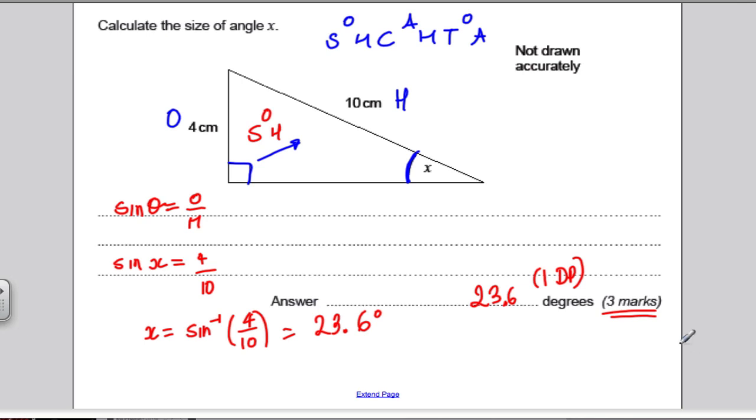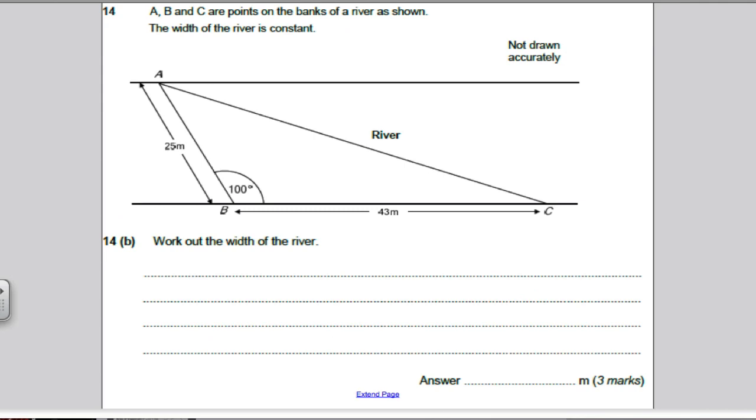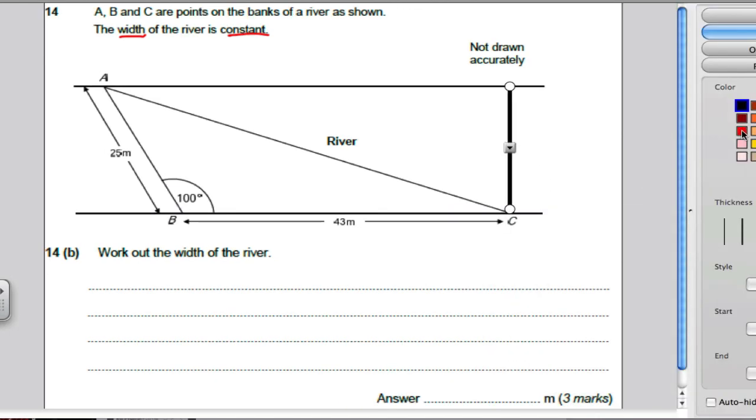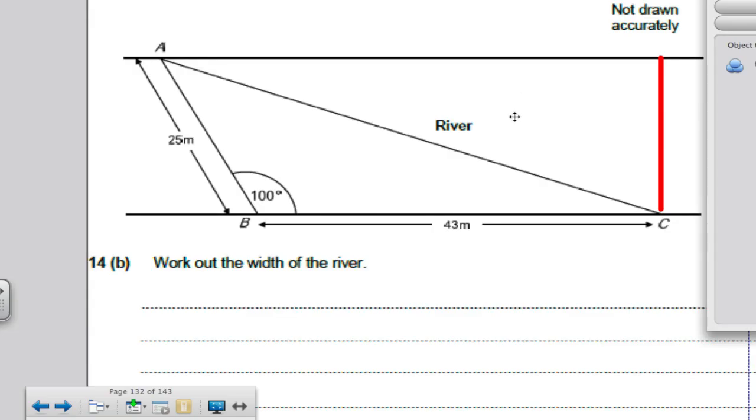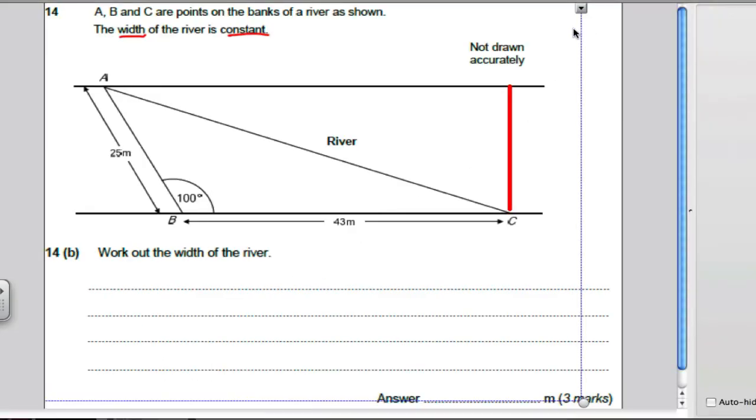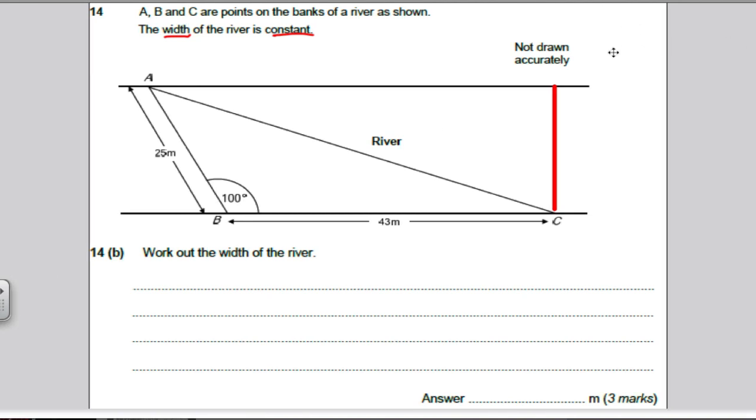Next question. Pause the video. Have a go. Mark your work. Okay. In this question here, it's talking about a river. Here's a river here. And it asks you, it says the river is a constant width. It asks you to work out the width of the river. Now, the width of the river is the length at right angles to the banks, isn't it? So, let's just go like that. So, we're asked to work out that length there. Now, how on earth do we work out that length there? Well, it's quite tricky.